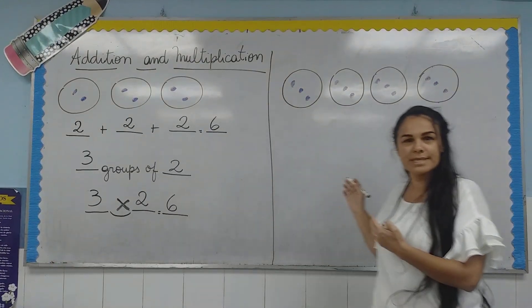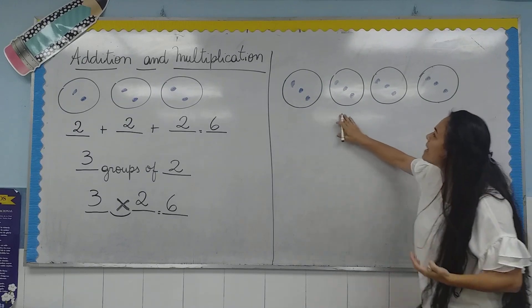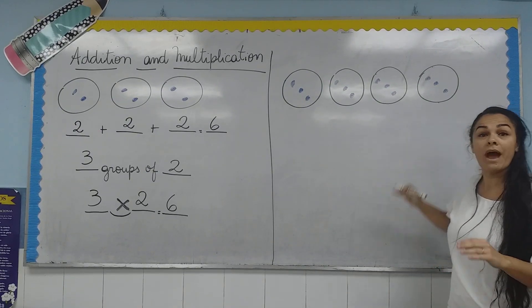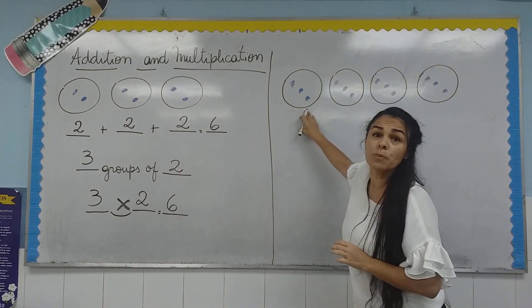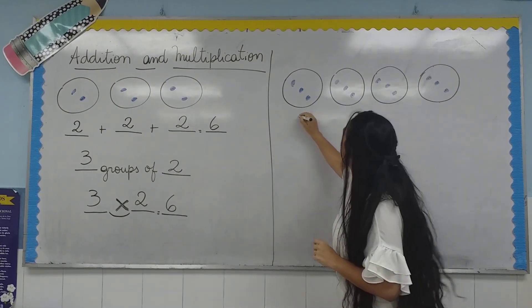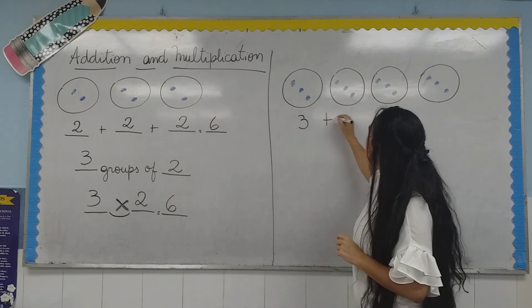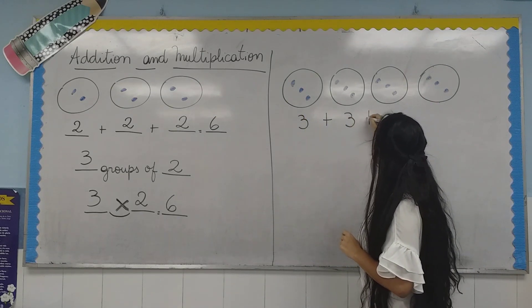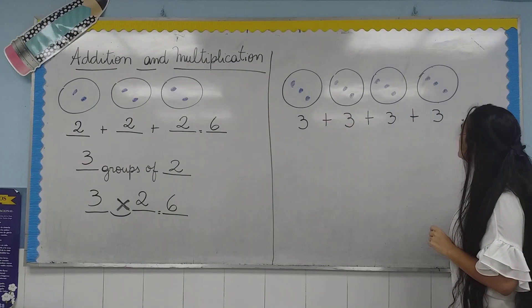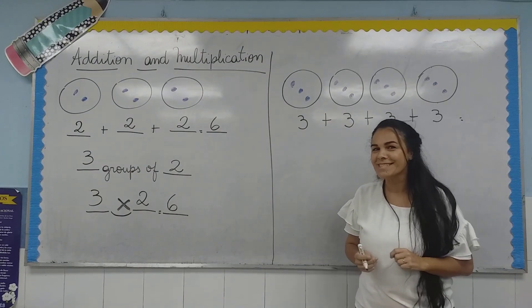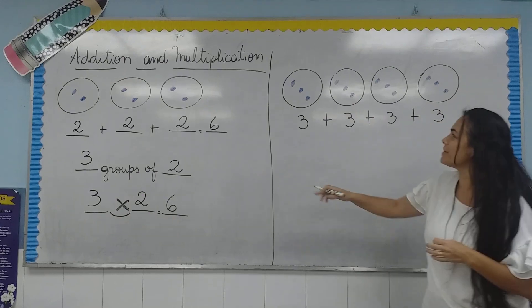Let's see another example here. How many groups do we have? We have four groups. So, we can say that and in each group we have three items. Three plus three plus three plus three. Can you tell me the answer? Let's count all together.